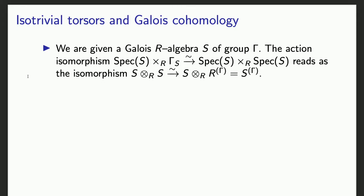There is another class of torsors even better than locally trivial for étale: they are called isotrivial. When I say locally étale I do not ask the torsor to be trivialized by a finite étale cover. Isotrivial torsors are those which can be trivialized after a finite étale base change.